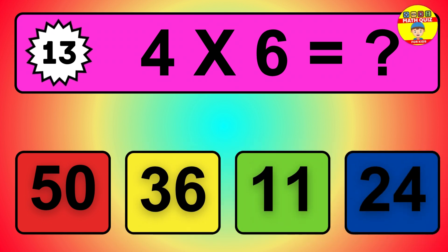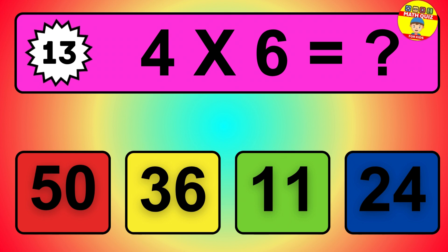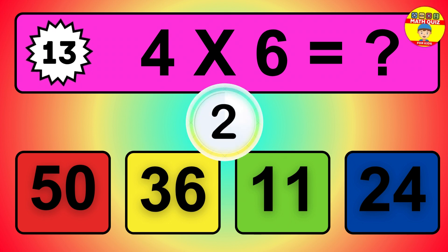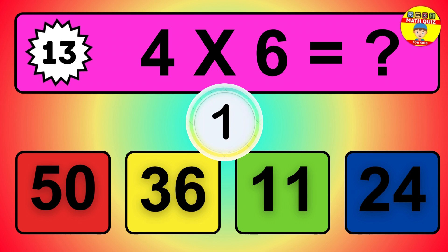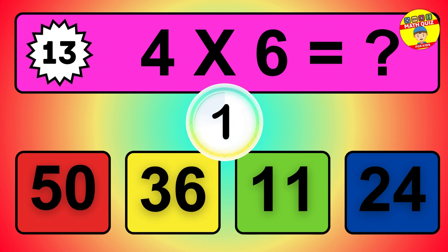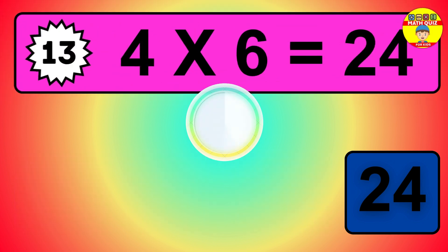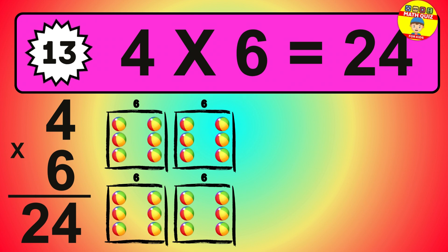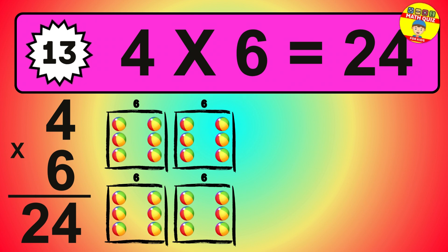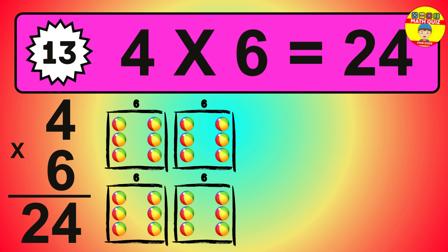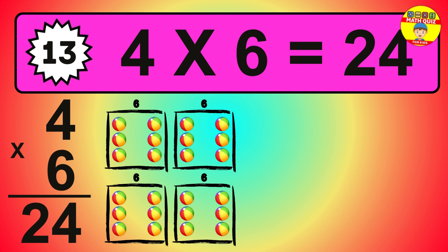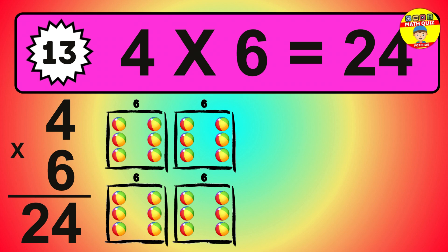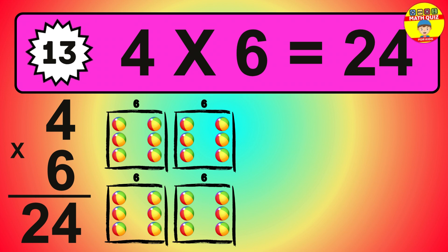Question 13. 4 times 6 equals what? The answer is 4 times 6 is 24. To calculate, we have 4 groups with 6 balls each one. So how many balls do we have? 24 balls.